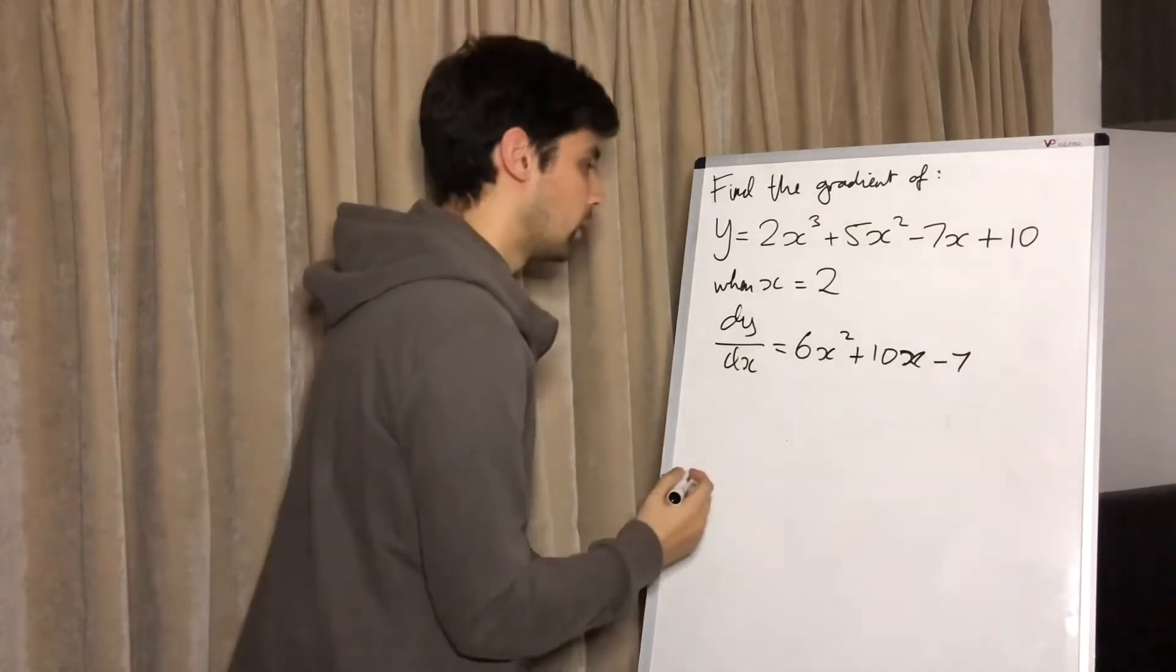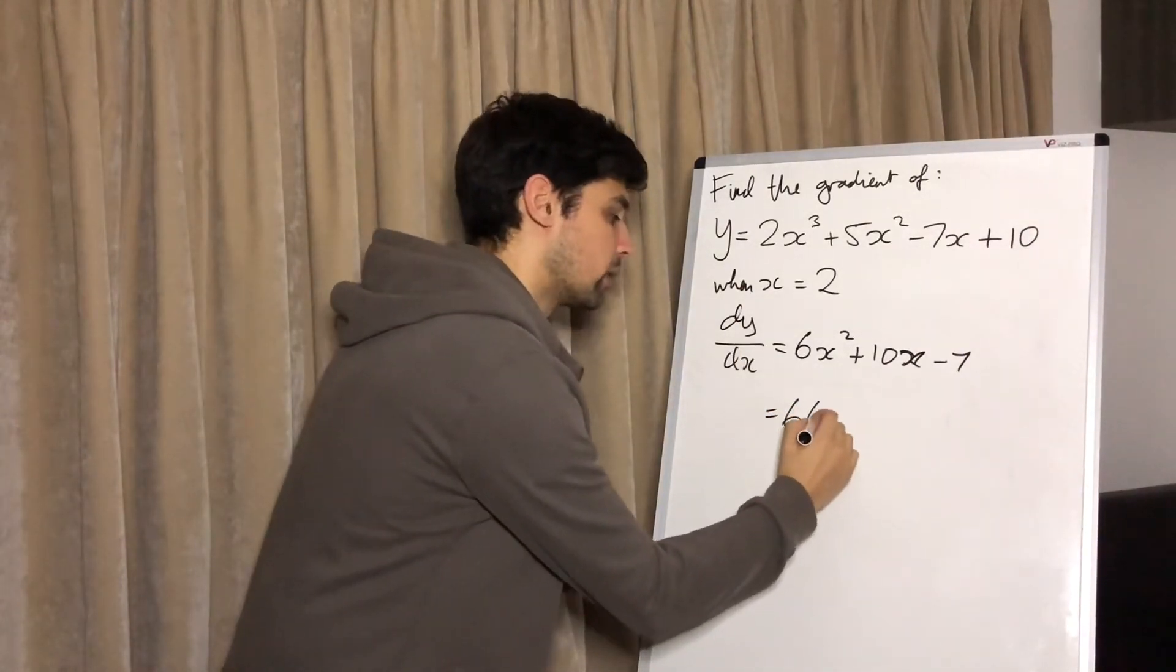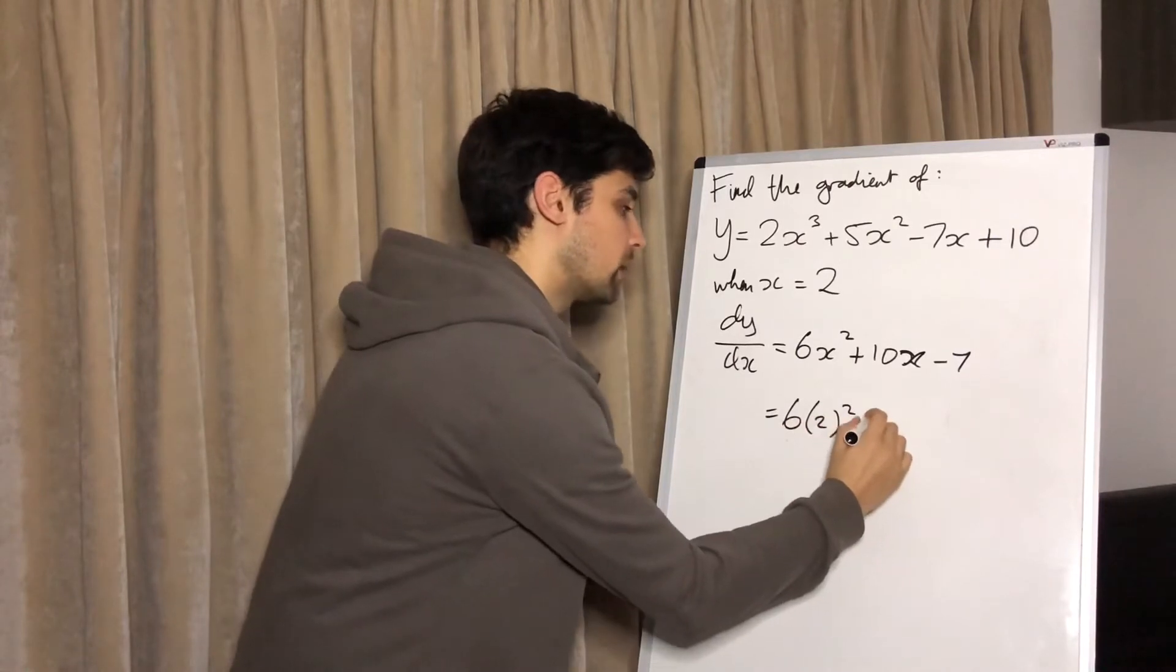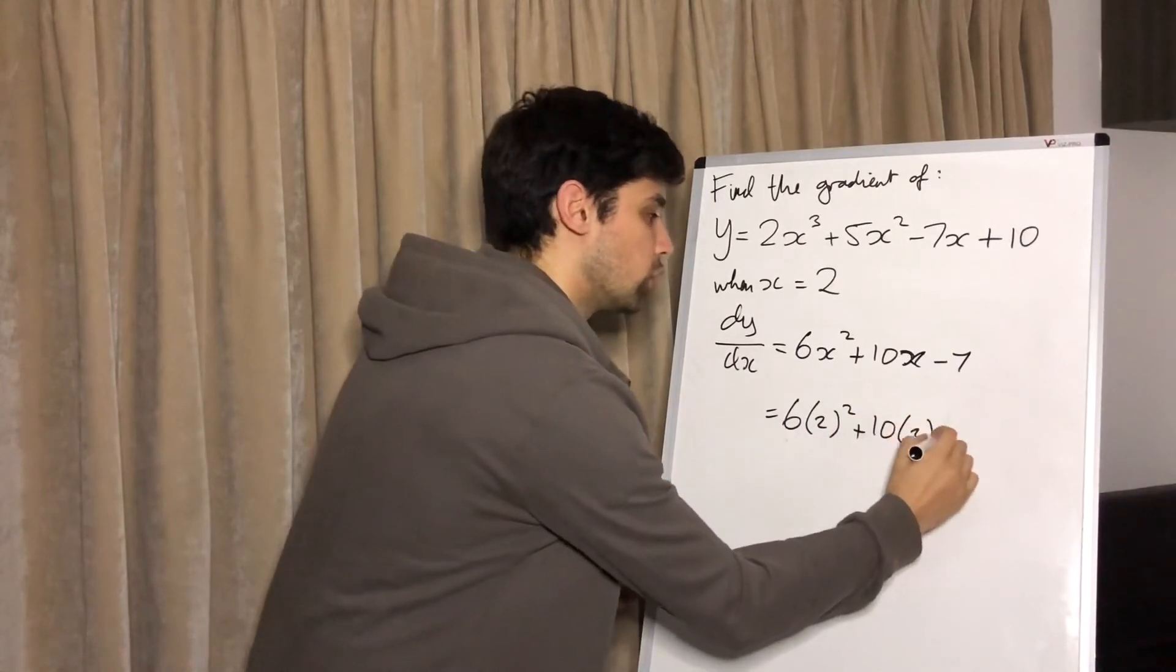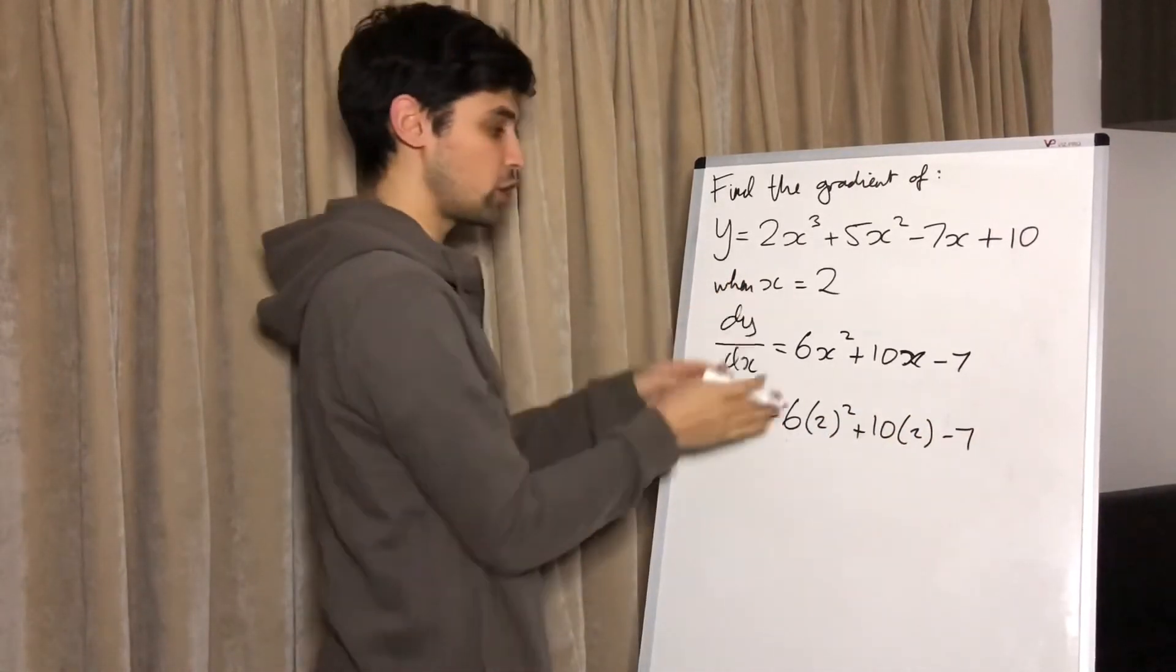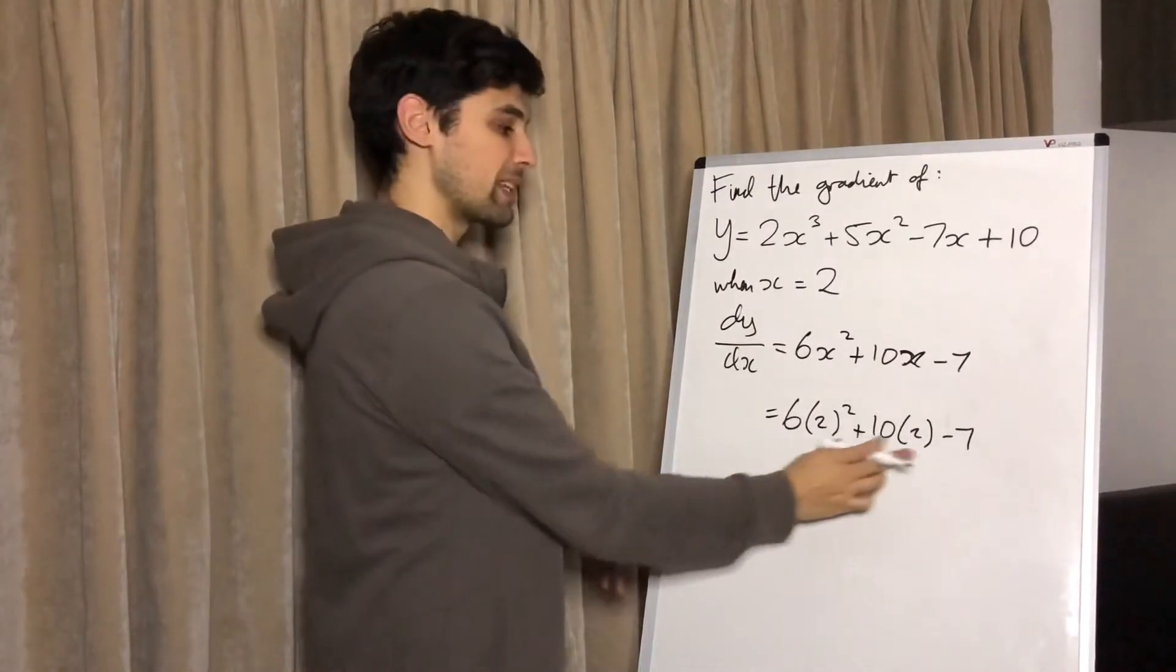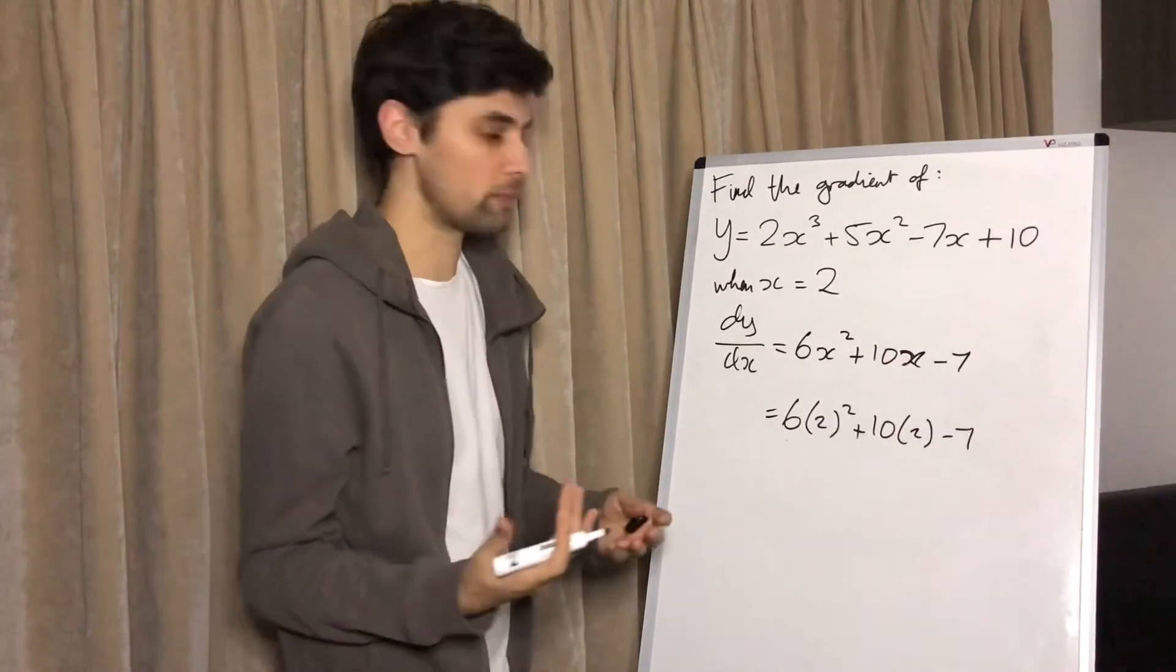So here, when x equals 2, we've got 6(2)² + 10(2) - 7. I always like to substitute in in brackets. It's so important because it makes it very clear, reduces the chance for making a mistake.